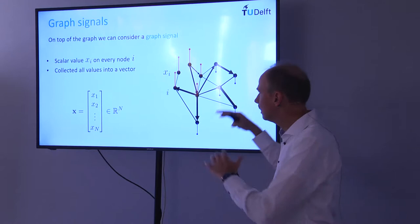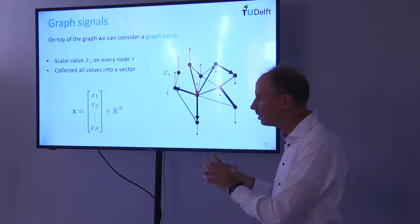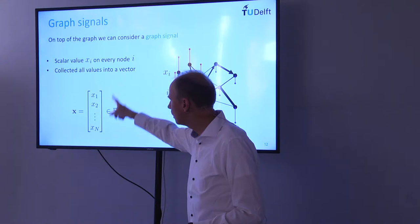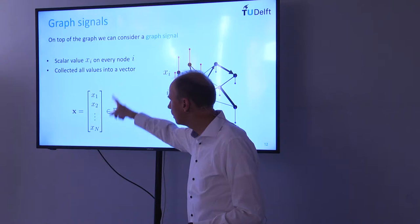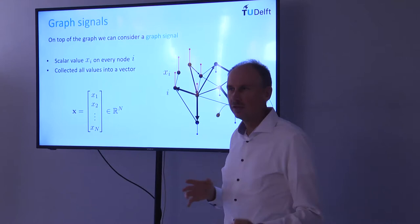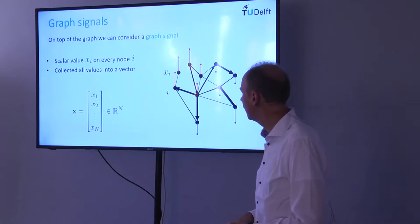A graph signal assigns a scalar value to each node, stacked into a vector x_1 up to x_N. You can order them any way you want as long as the ordering in the vector matches the ordering in the adjacency matrix — these two must be consistent.